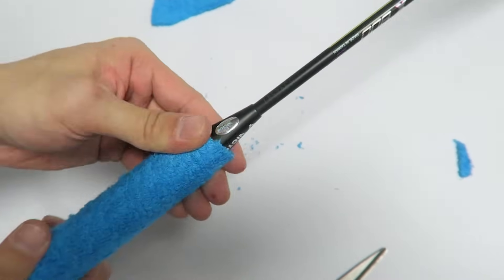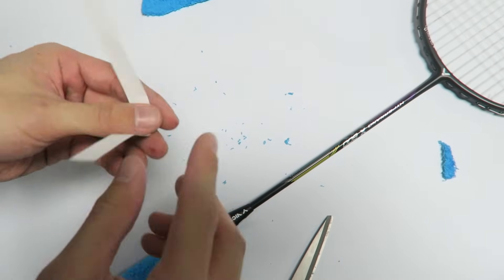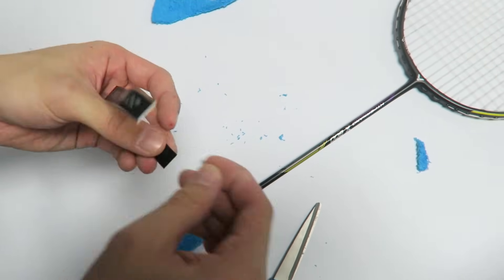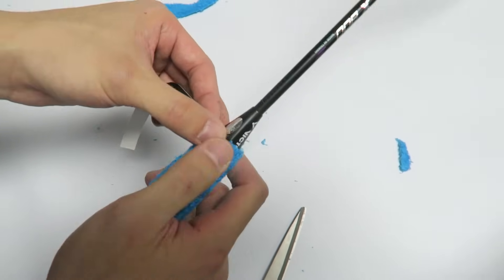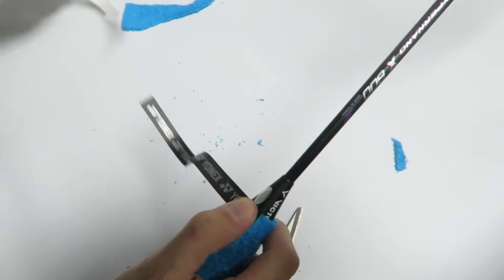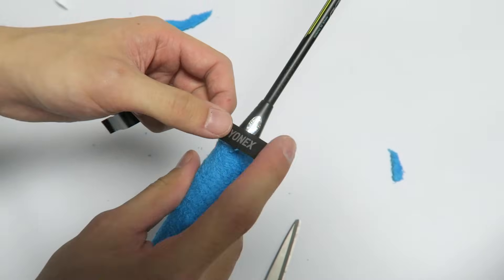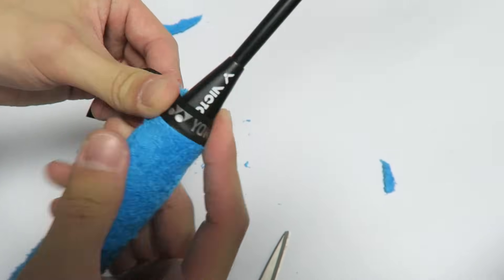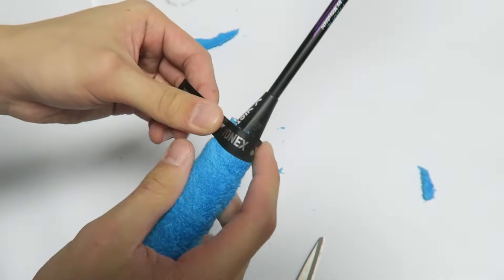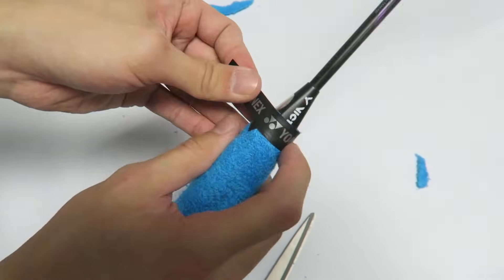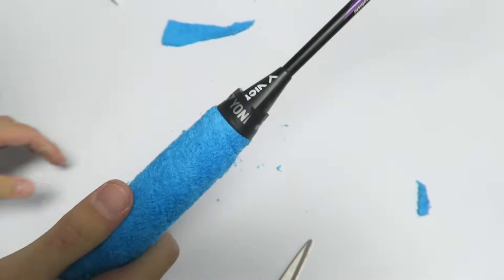And then at the top if you want to have it more secure you can put on the sticker that they gave you. So just take off the backing. And then apply it onto the end of the grip here. Give it a good stretch as you go around. If you don't have the sticker you can also use the athletic sports tape. That would also work.